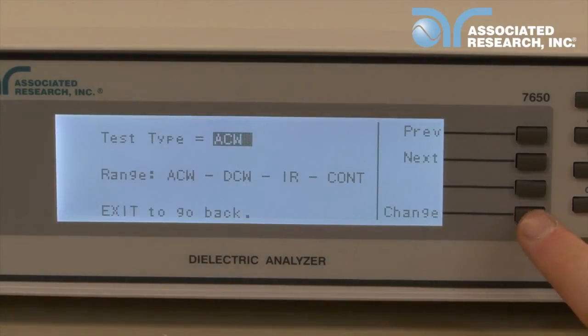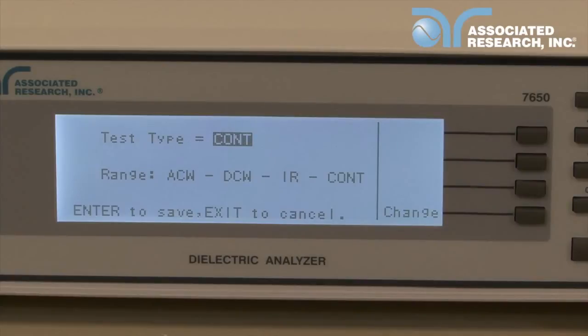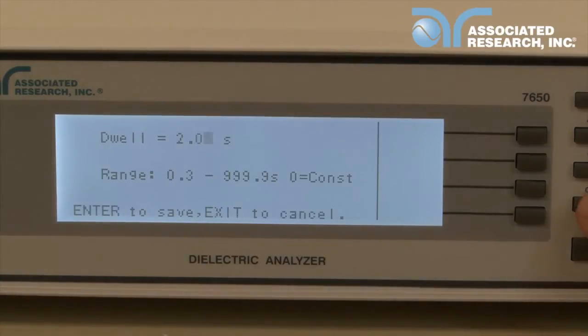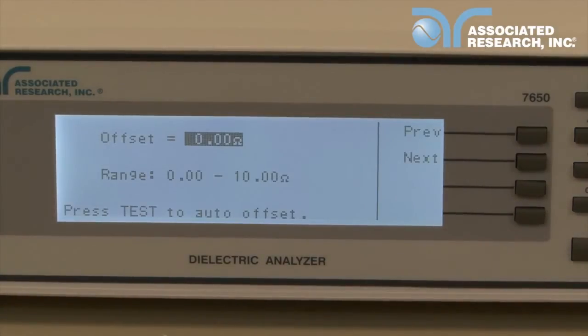Press the change key on the test type to change the test to continuity. Use the up and down arrow keys to navigate the parameters. Press the edit, change, or numeric keys to change a parameter value and press enter to accept. To cancel a parameter change, simply press the exit key.